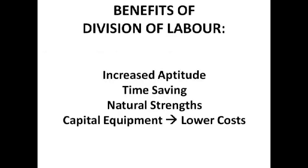There are loads of benefits of division of labour, which is why so many companies have taken it on board. One of them is increased aptitude. Because workers are doing the same thing over and over, they get better and better at it, meaning they do it faster and to a higher quality. The goods they produce are of a higher quality, which means the firm gets a better reputation, can sell for more, and gets more profit.